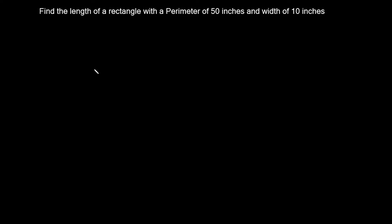What's up you freaking geniuses! In this video I'm gonna go over some perimeter and area word problems. Let's start with this first one right here. It says find the length of a rectangle with a perimeter of 50 inches and a width of 10 inches.